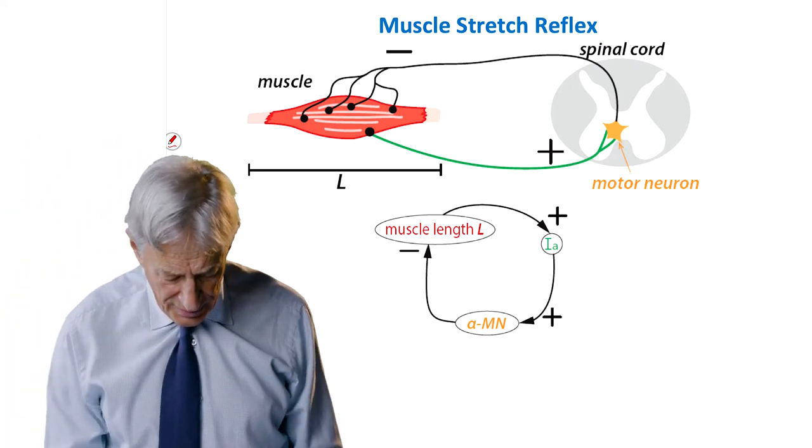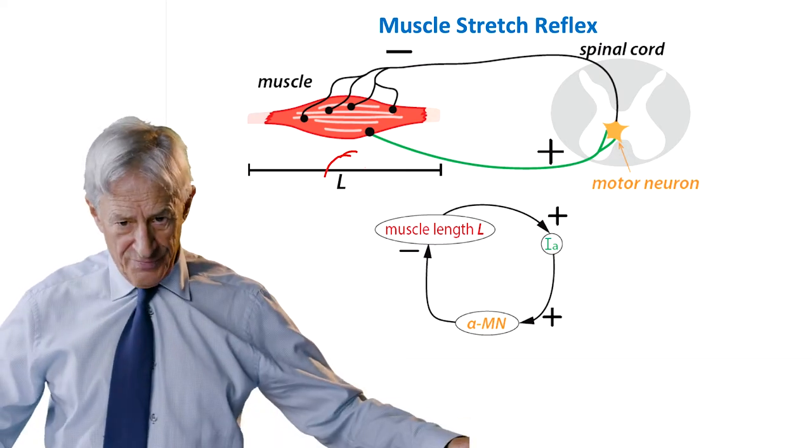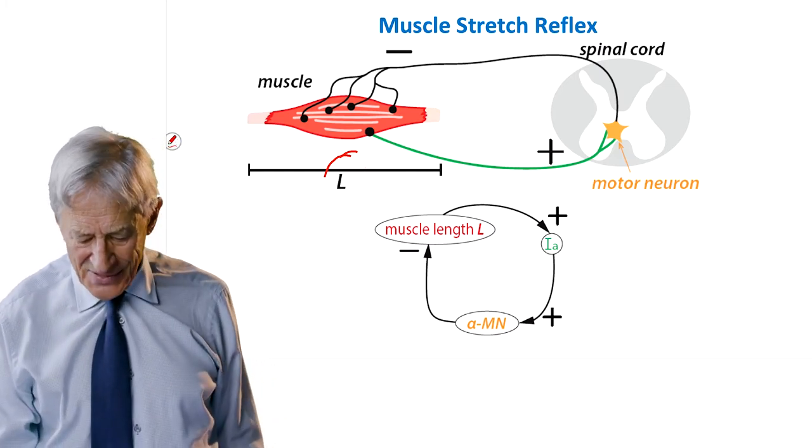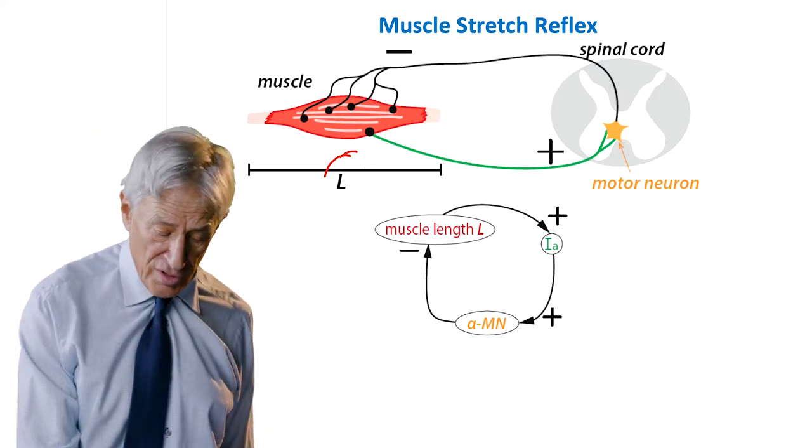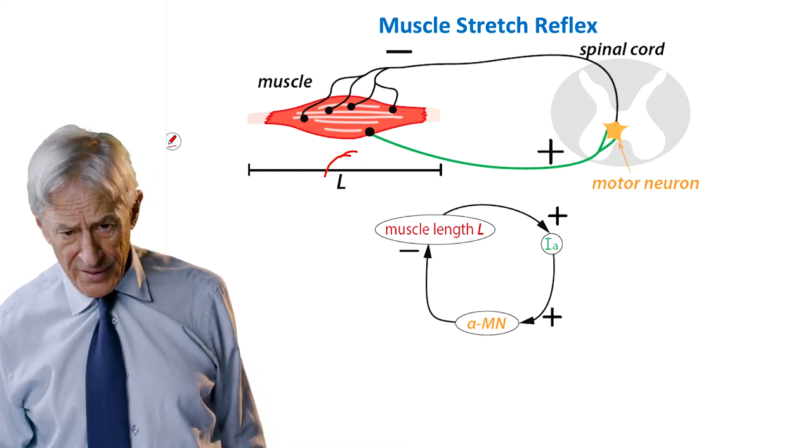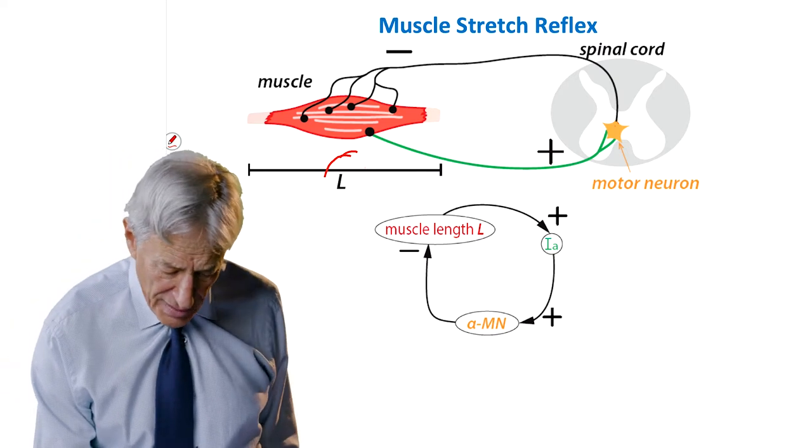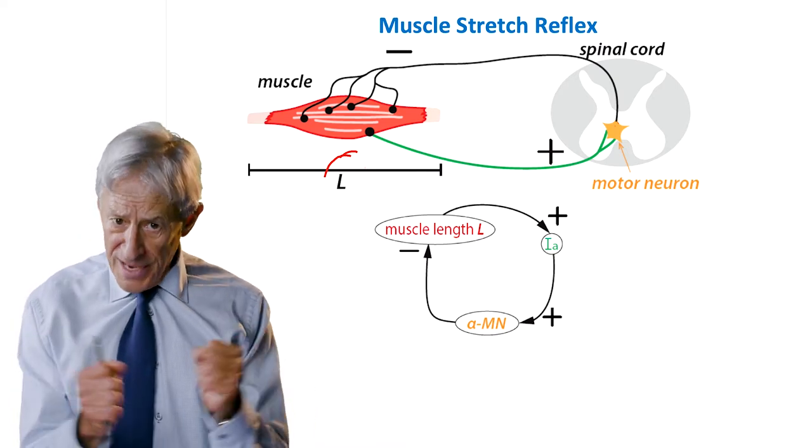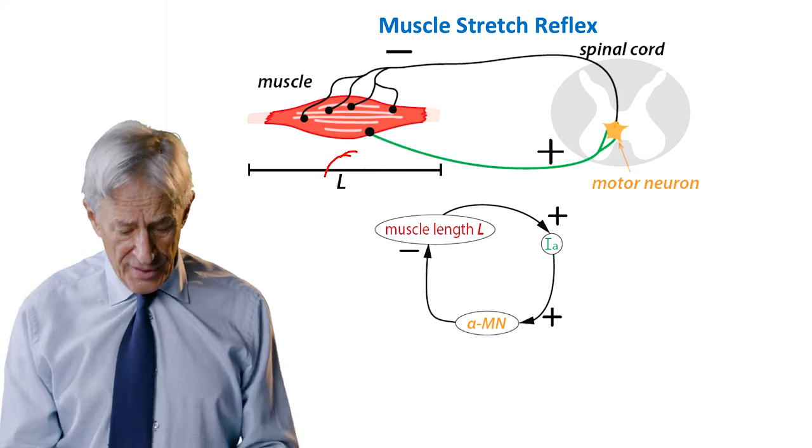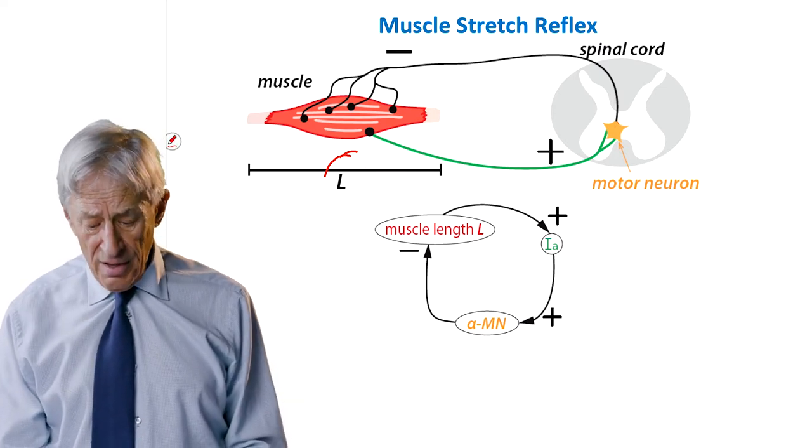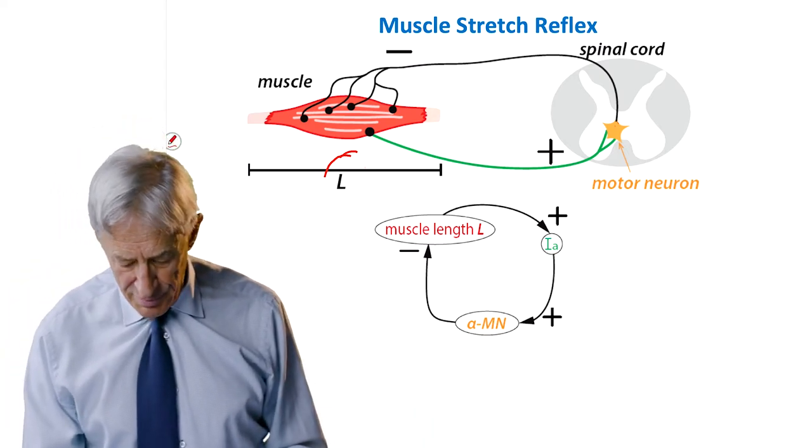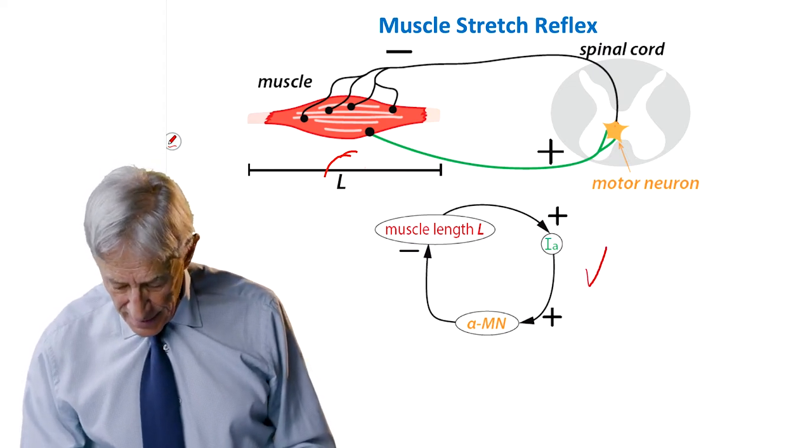And I'm doing that because I have this stretch reflex. And the stretch reflex says, basically, when the muscle length is stretched, that the stretch receptors in the muscle send positive signals to the motor neuron. And they increase motor neuron firing in the spinal cord there. And the increased motor neuron firing then makes the muscle contract. And that's a minus on L, obviously.